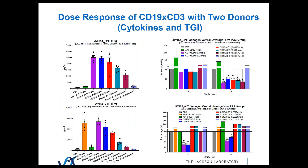This goes back to the idea of looking at efficacy. Here are two different donors that are pretty diverse. The top donor, 9636, has cytokine on the left and TGI on the right — this is the one I showed you before. The donor below is significantly different when it comes to efficacy. Only at the two highest concentrations, at two and four days post-drug treatment, do you see any signs of reduction of tumor burden. So once again, we're seeing donor variability when it comes to response to therapeutics, which kind of makes sense.